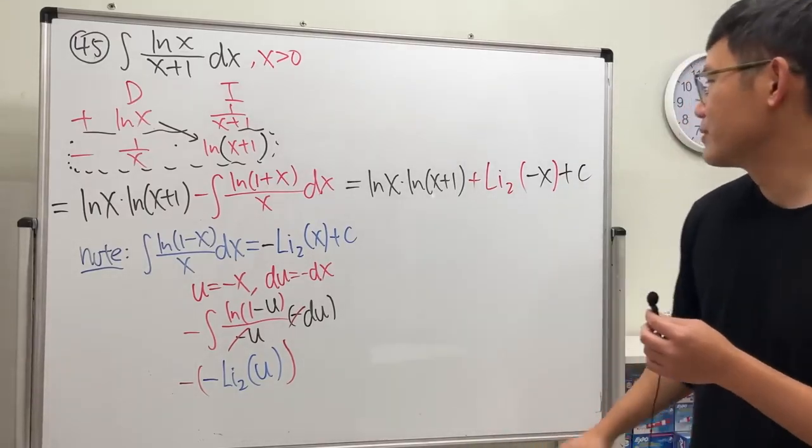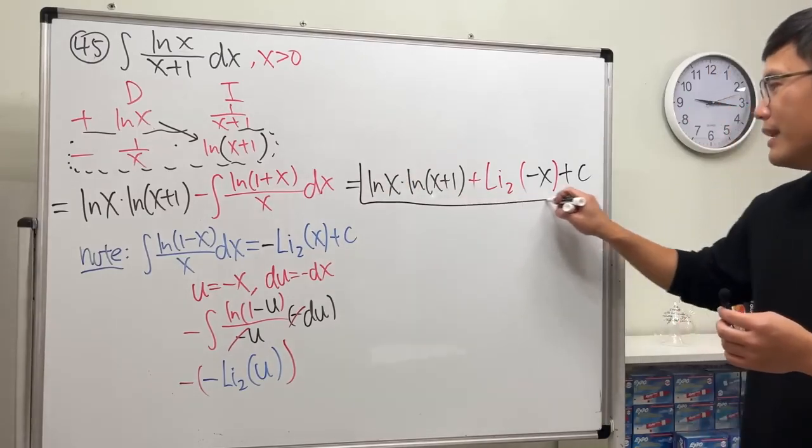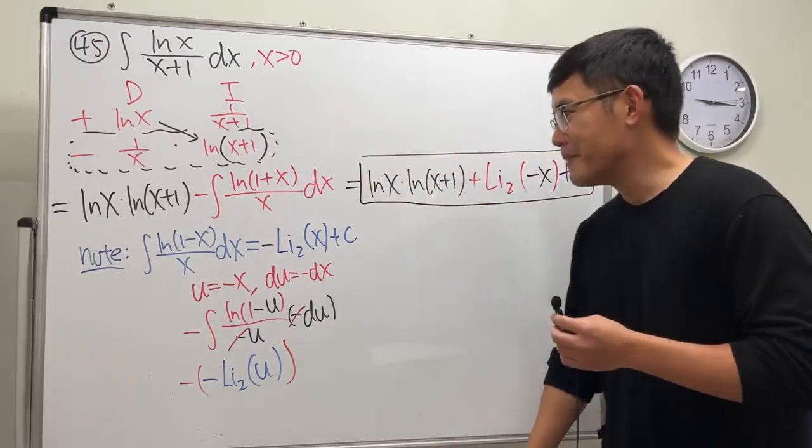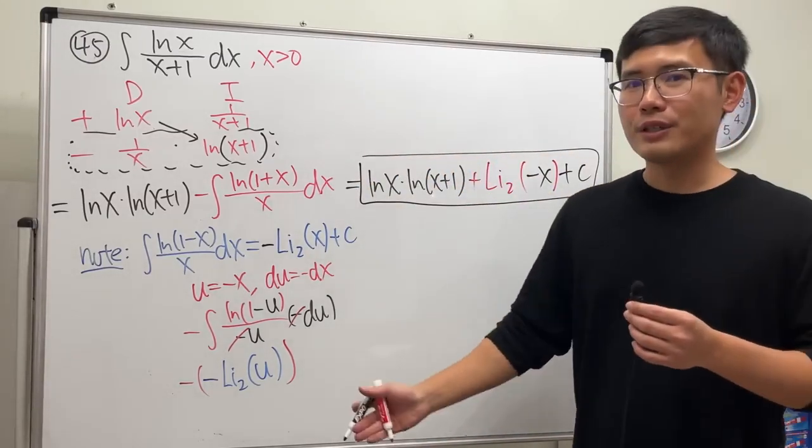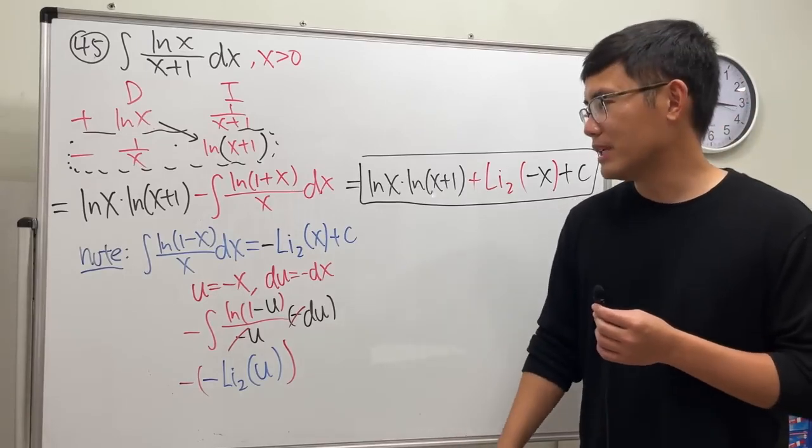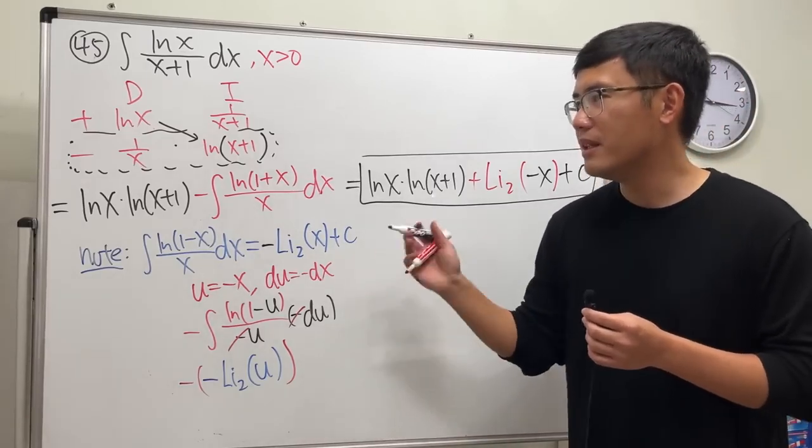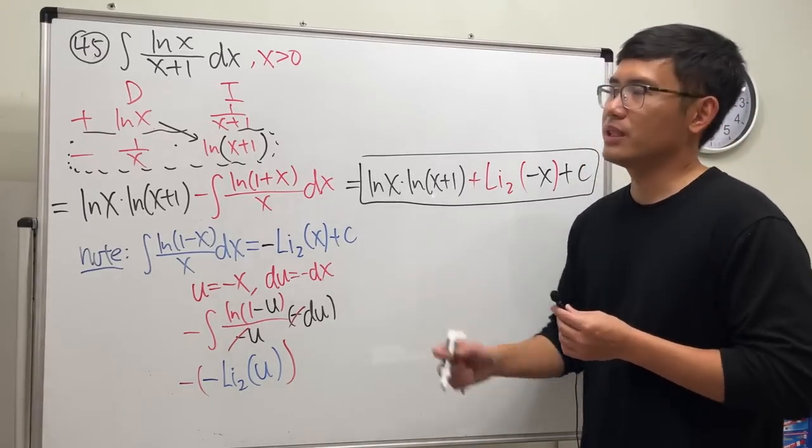So this is perhaps the special function that you have to be the most careful with, because it just has so many negative signs. Just like that, that's what you have to be careful about.